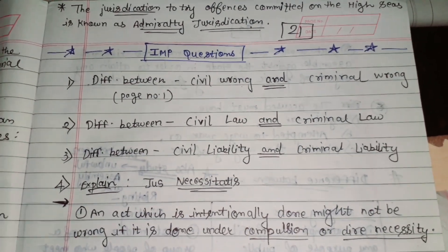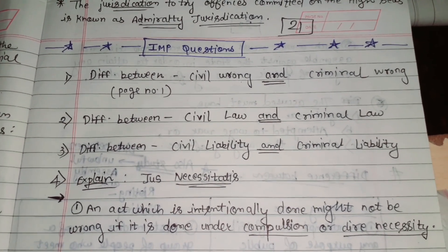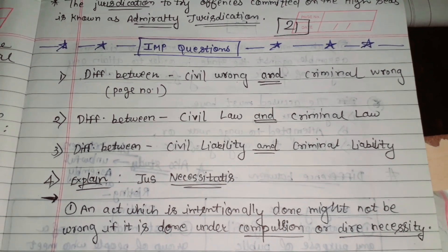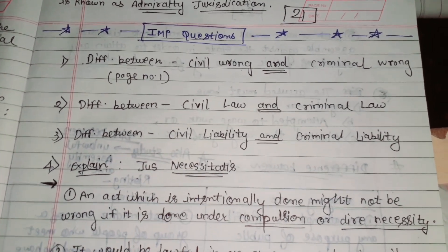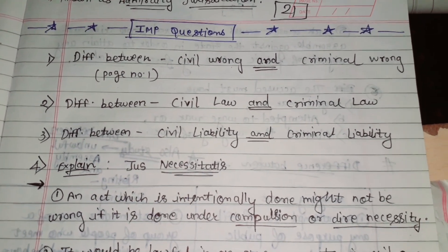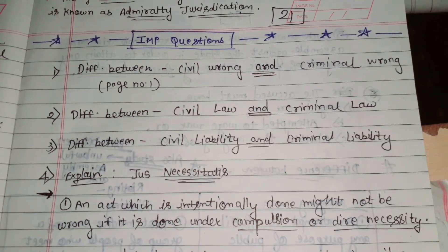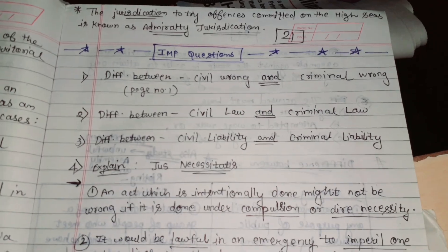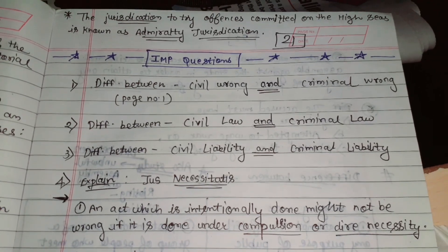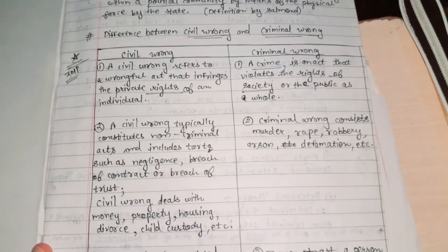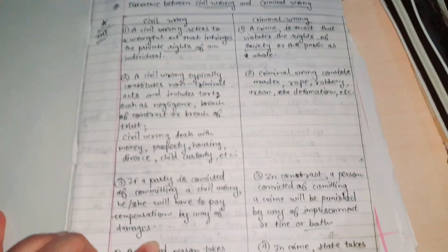Important questions. The first is the difference between civil wrong and criminal wrong. Second, the difference between civil law and criminal law. And third, civil liability and criminal liability. For these three differences, the same points we have to write. We have seen this difference in our second video of IPC.